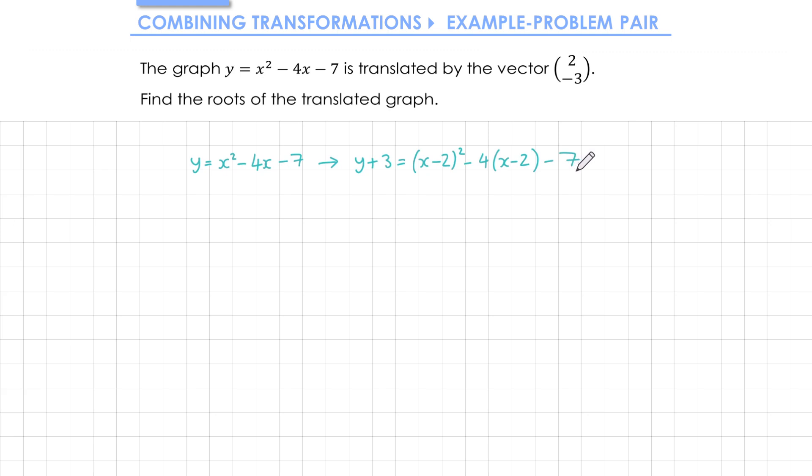That's the translations applied, but as I need to find the roots, I'm going to simplify. Expanding out the bracket gives x² - 4x + 4, and then expanding the second bracket gives me -4x + 8.